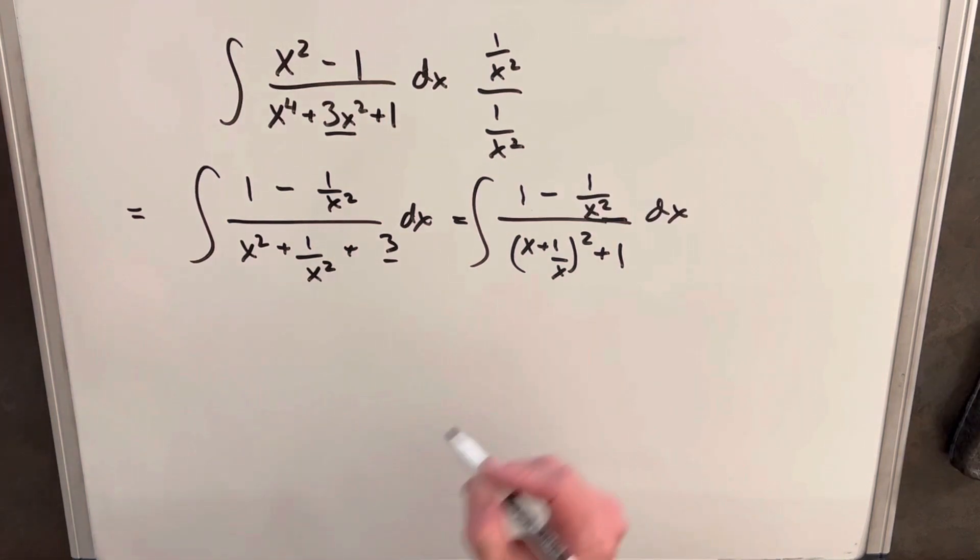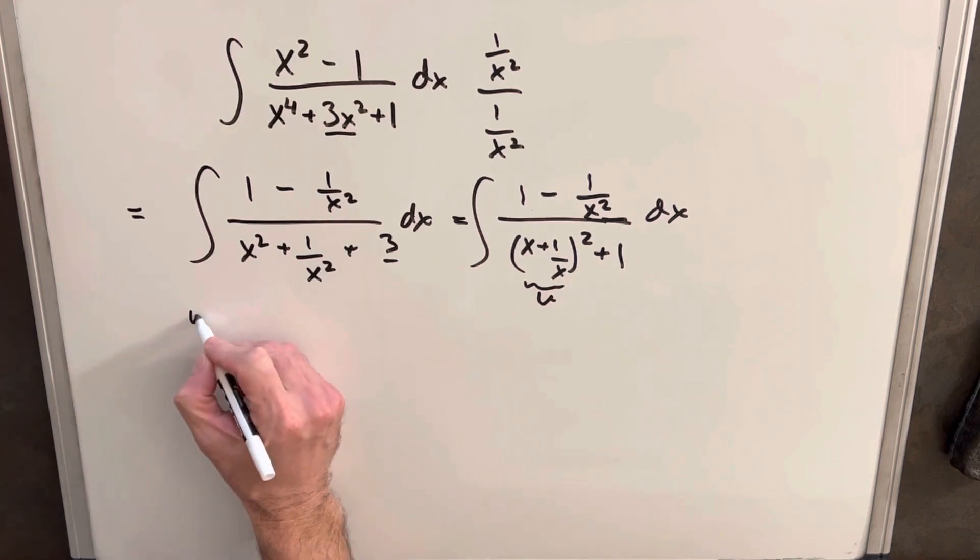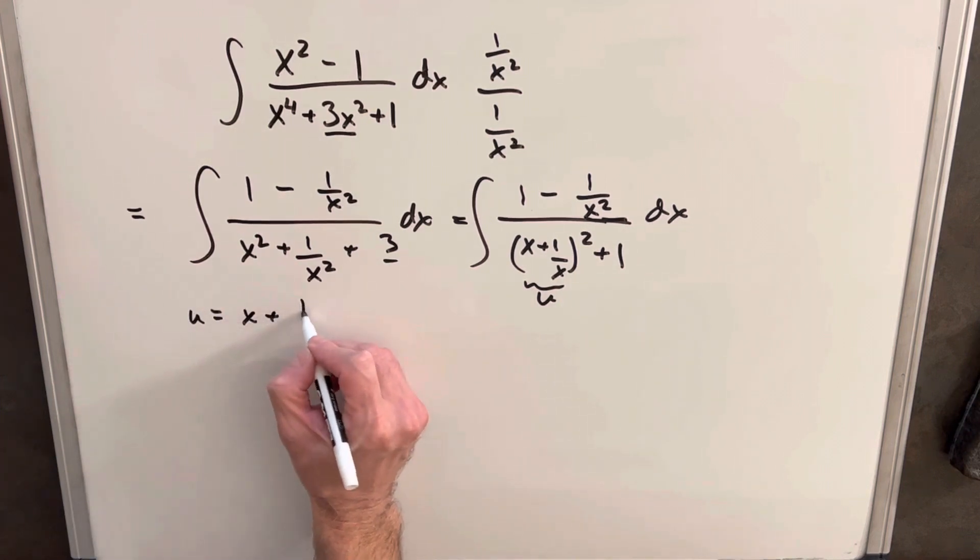From here, what we'll do is we'll try u substitution. We'll make this our u, noticing that that's going to be, if that works, it's going to be nice because then we can use, hopefully we can use inverse tangent or a trig sub. So okay, so our u is x plus 1 over x.